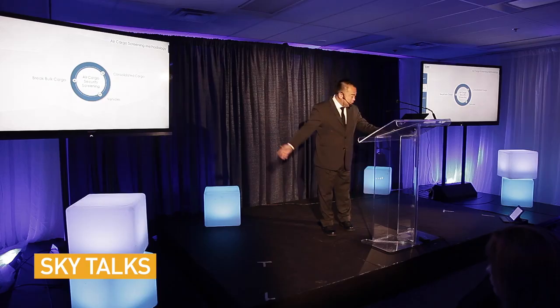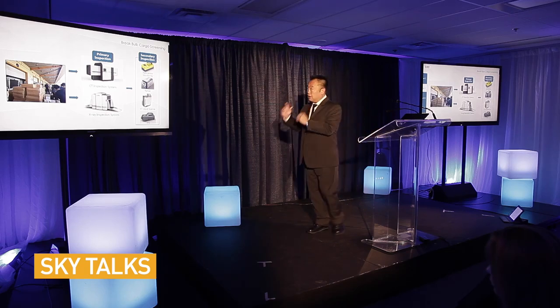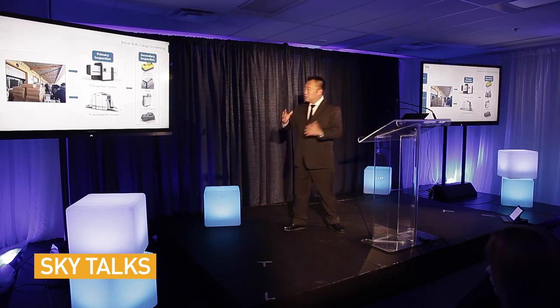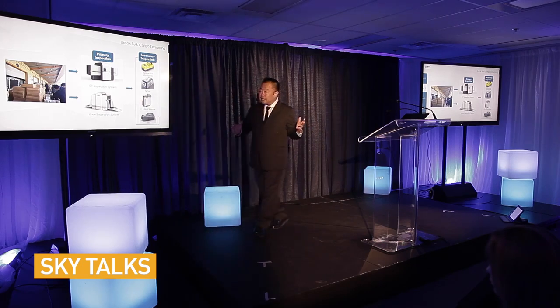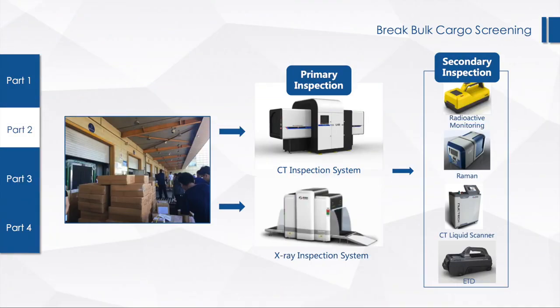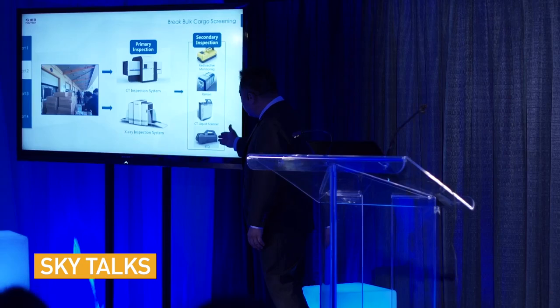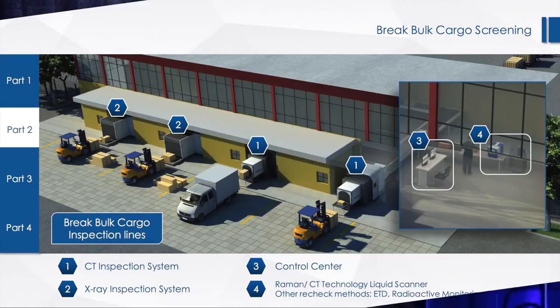What do airports practice today? There's something called break-bulk screening. Before the cargo is consolidated, the small parcels, boxes, or individual packages get screened through an X-ray machine that typically has a tunnel. If they're not sure of the result, they do an additional layer of screening using secondary devices, such as trace or liquid scanners, just to make sure the cargo or goods are within the parameters of safety.